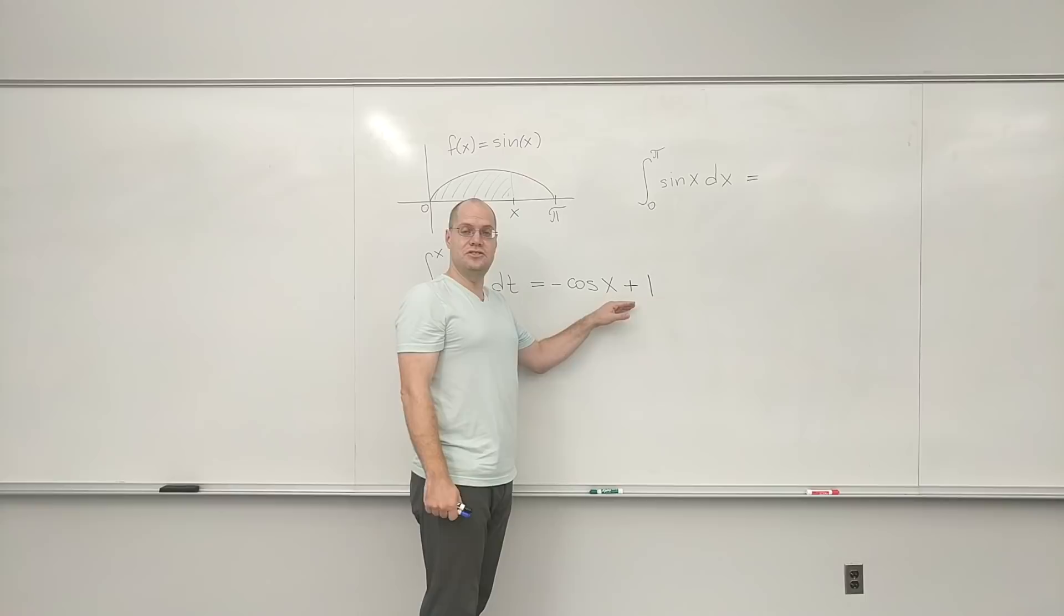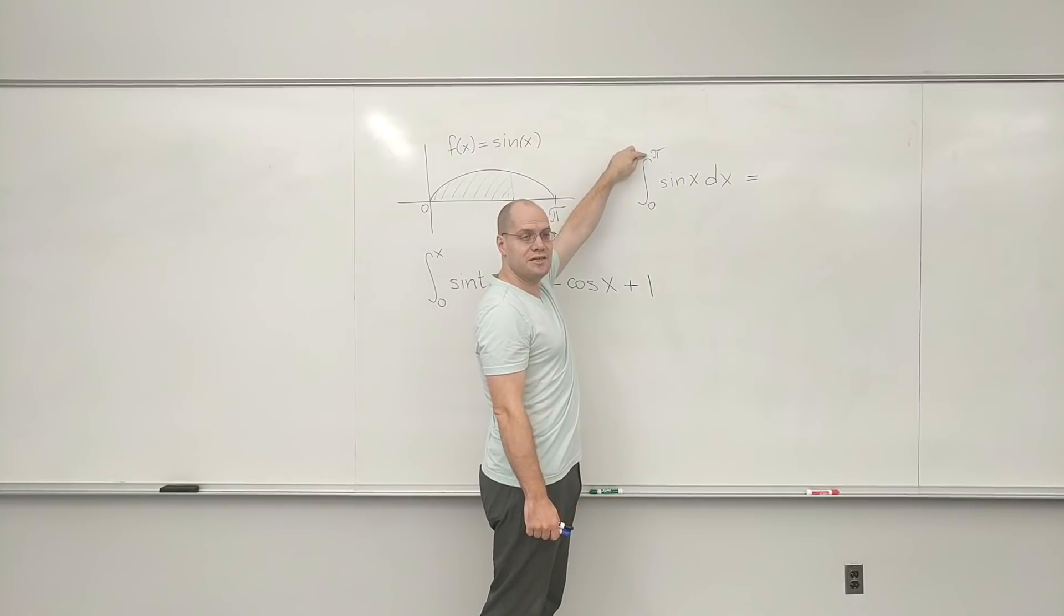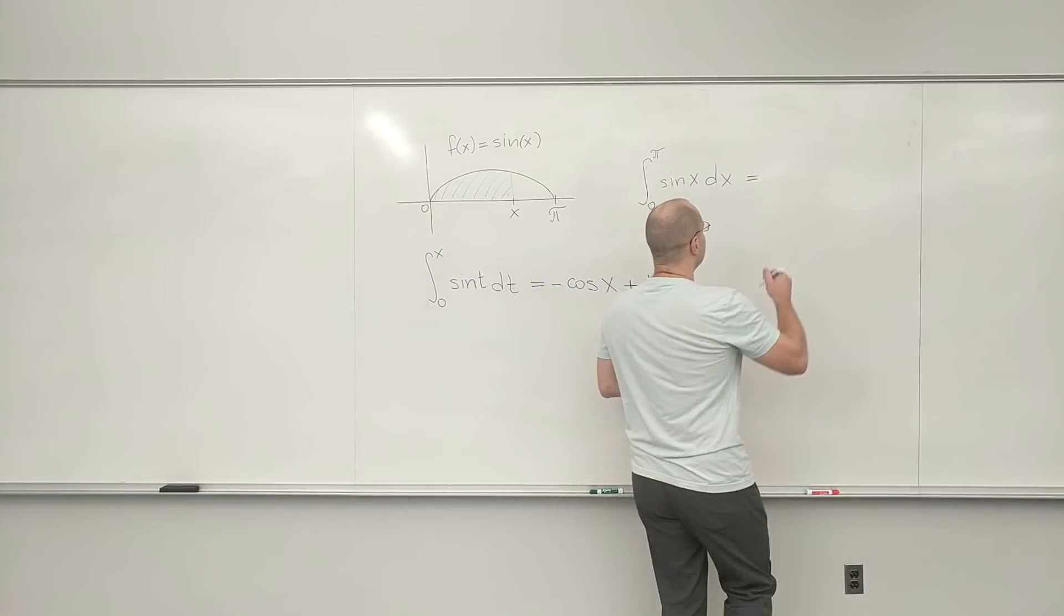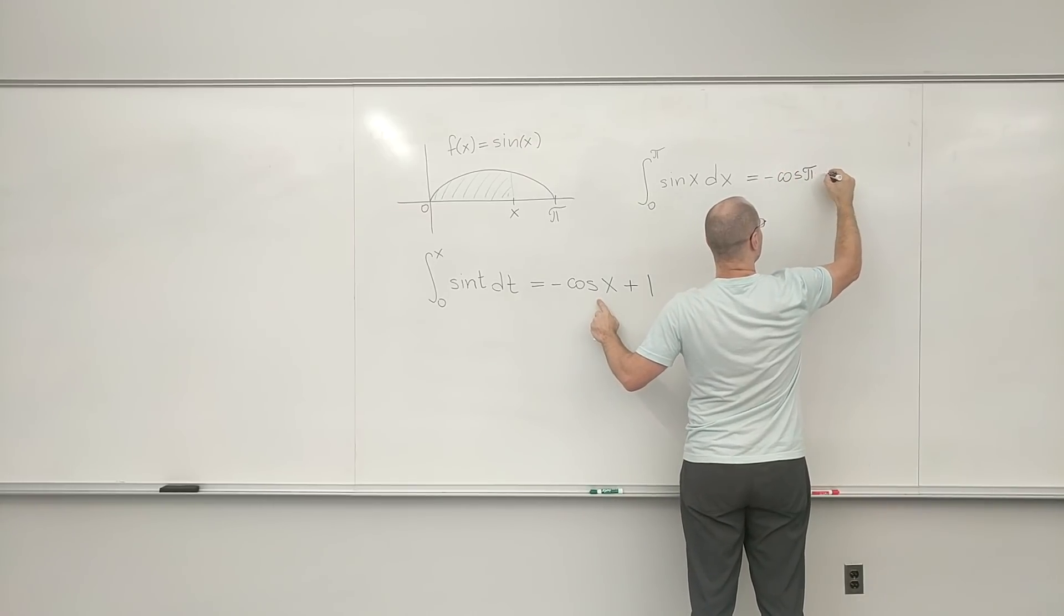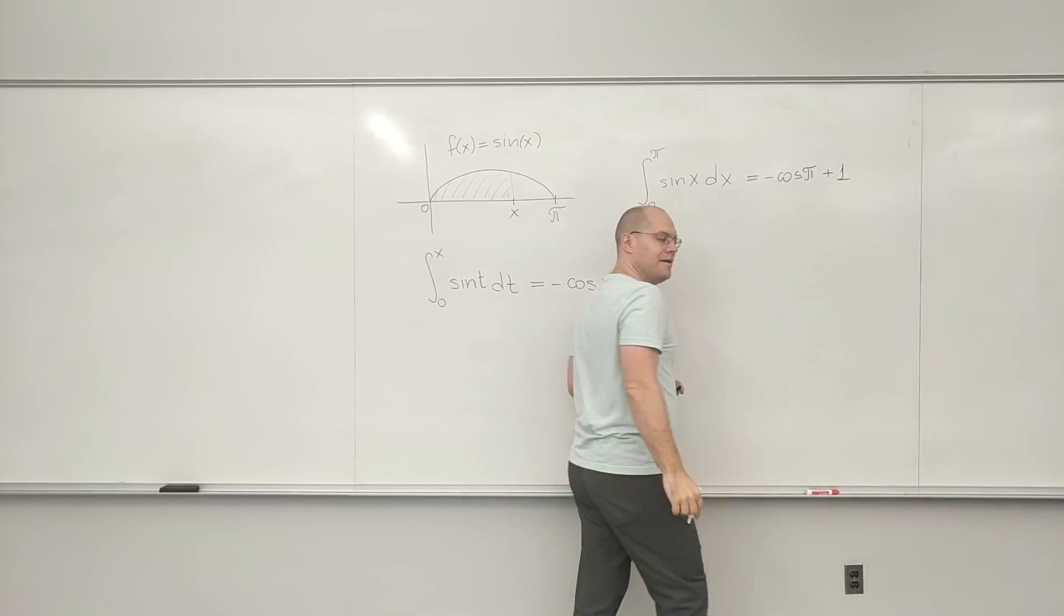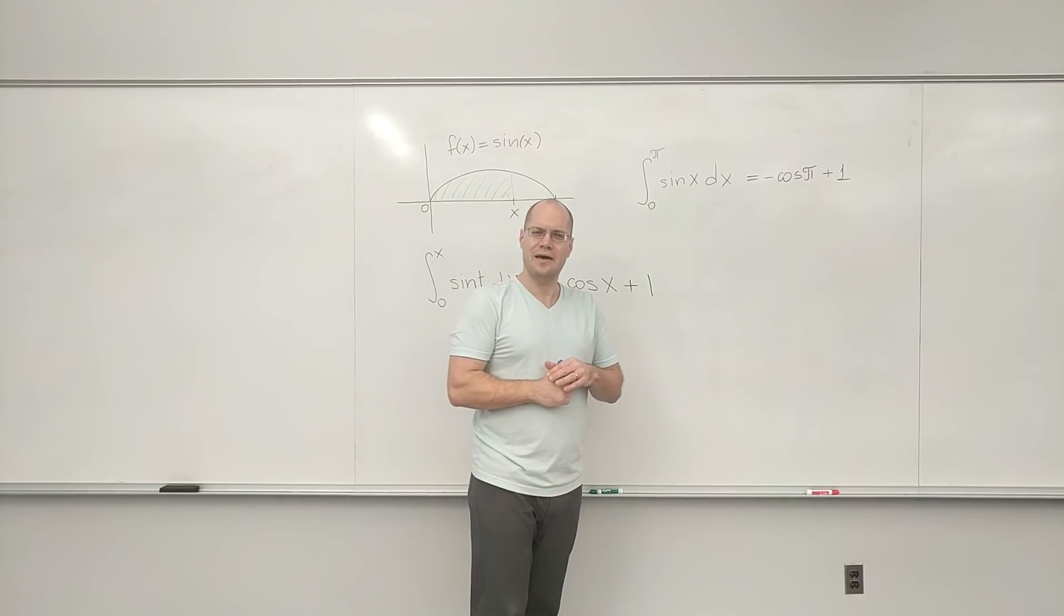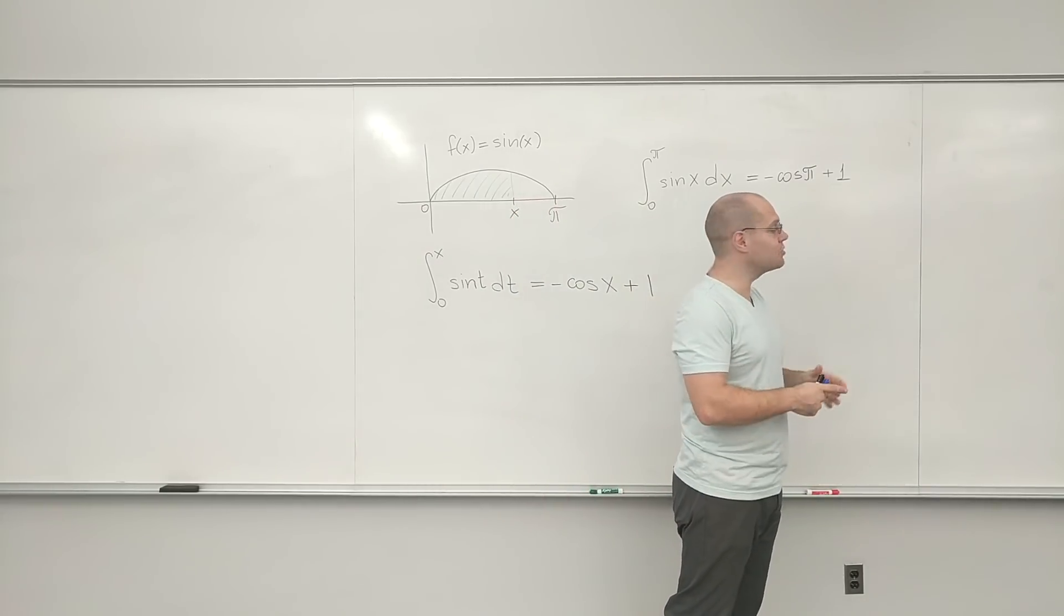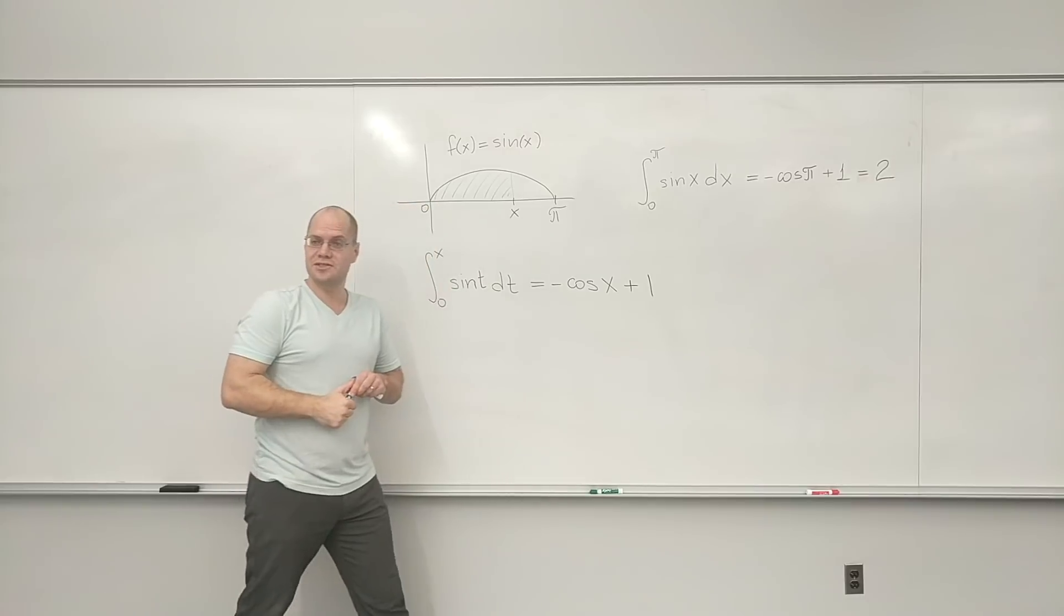So here we have the function that describes the area under this curve between zero and x. And we want this particular value of it. So all we have to do is plug in π for x. So it's going to be minus cosine of π plus one. All I did was plug in π for x. And what is cosine of π? So minus cosine of π is one. So this expression equals two. So it's consistent with our earlier guess. And we have solved our first integration problem.